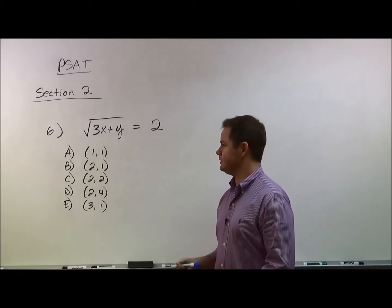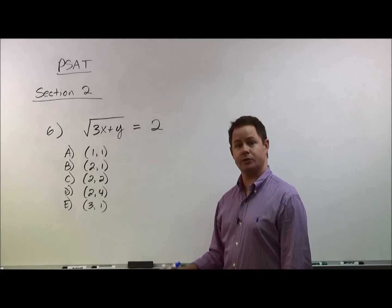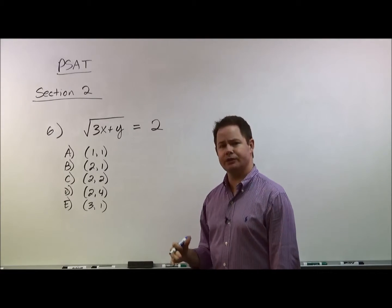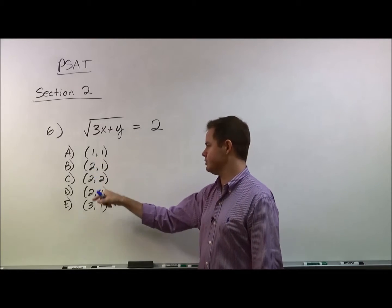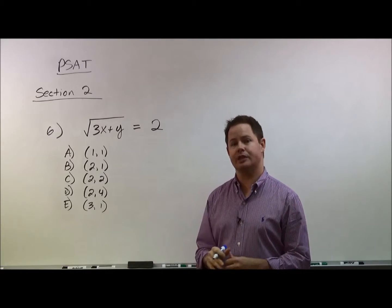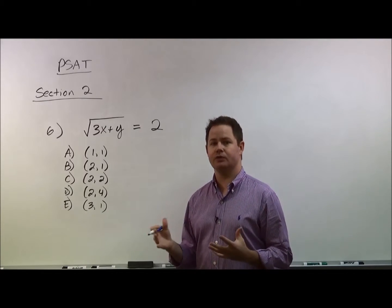So the easiest way to do this is just to go through each answer choice and see what works. And the numbers here are relatively small. We have ones and twos, we have a three and a four, but most of it's ones and twos. So we know that plugging it in is not going to be a hugely difficult calculation.